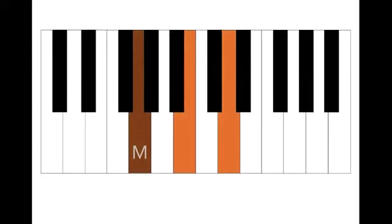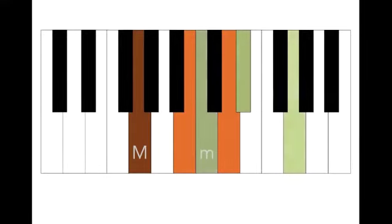Essentially what we have is a major triad followed by a minor triad. The brown is the major triad and the green is the minor triad.